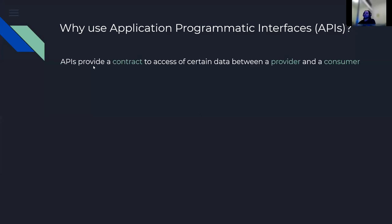Why would we use application programmatic interfaces — APIs? From my point of view there are three simplistic reasons. The first is that APIs provide a contract between a provider and a consumer — a way to access certain data. You agree upon parameters or conditions, and once those conditions are met, you exchange data. As a consumer, as long as you tick the required boxes, you expect the provider to deliver what has been agreed. This is sometimes referred to as API specifications.